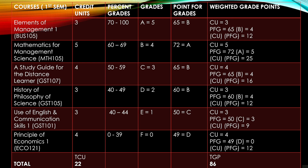To further break down the grading process: A equals 5, B equals 4, C equals 3, D equals 2, E equals 1, and F equals 0. Now let's move to the next thing, which is the points for grades.